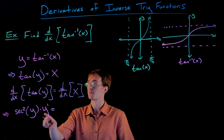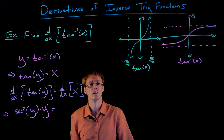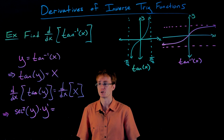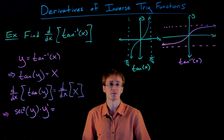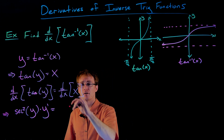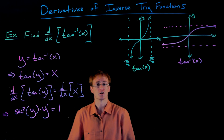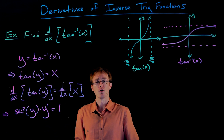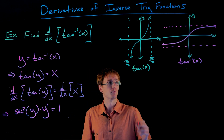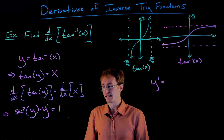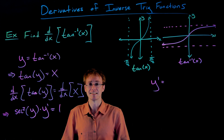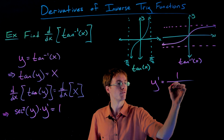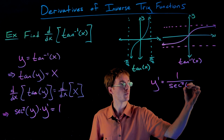We know what y prime is representing: y prime is the derivative we are seeking — the derivative of our inverse tangent function. We can't forget to differentiate the right-hand side as well. The derivative of x with respect to x is just 1. Now, just like in our inverse sine video, we have to solve for y prime to get the derivative we want. To do that, we divide both sides by secant squared of y. So y prime equals 1 over secant squared of y.